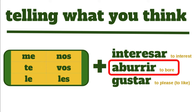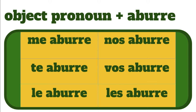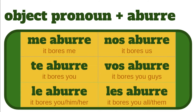To say the opposite of something interests us, we can say something bores us. In Spanish, for that, we use the verb aburrir, which works just the same way as the verb interesar. Me aburre, te aburre, le aburre, nos aburre, vos aburre, and les aburre. Me aburre — it bores me. Te aburre — it bores you. Le aburre — it bores you in the usted form, or it bores him or her. Nos aburre — it bores us. Vos aburre — it bores you guys. Les aburre — it bores all of you, or it bores them.